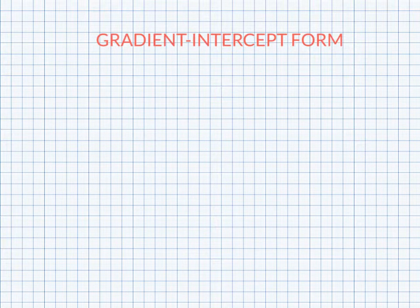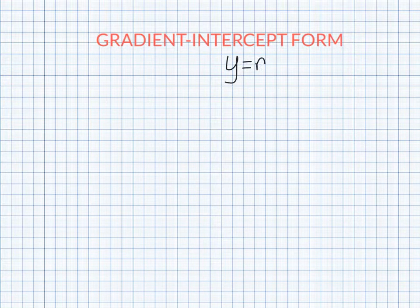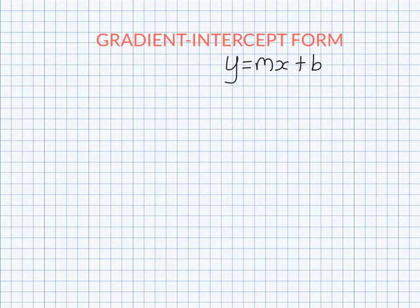So it turns out, unless the line is perfectly vertical, you can write the equation of any line in the Cartesian plane in the form y equals mx plus b.